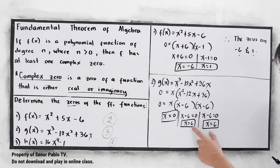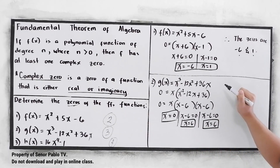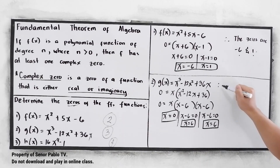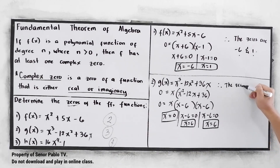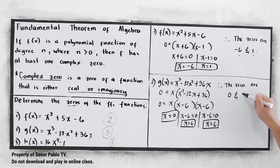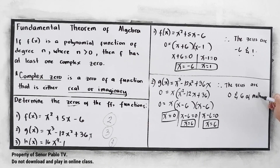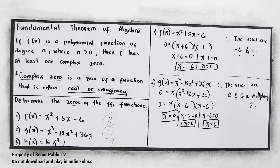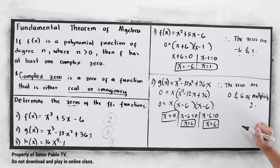Take note that 6 appears twice, so we can write the zeros as 0 and 6 of multiplicity 2, because 6 occurs twice as our zero.